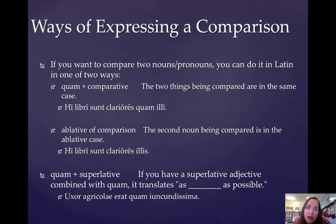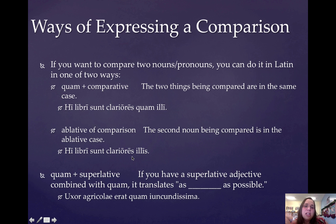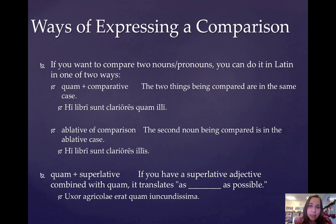Another construction you can use is called the ablative of comparison. The second noun being compared is put into the ablative case, and you just translate the ablative as 'than whatever.' Using the same example: instead of 'hi libri sunt clariores quam illi,' we have 'hi libri sunt clariores illis.' So instead of quam illi, we use the ablative of comparison illis, which also translates as 'than those.' These books are more famous than those.